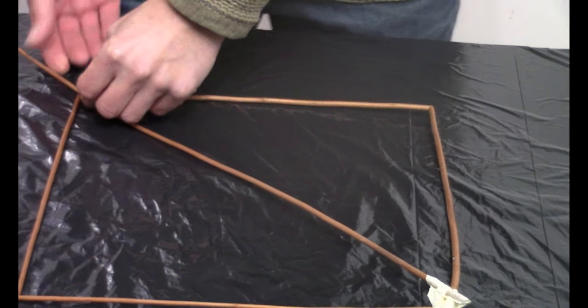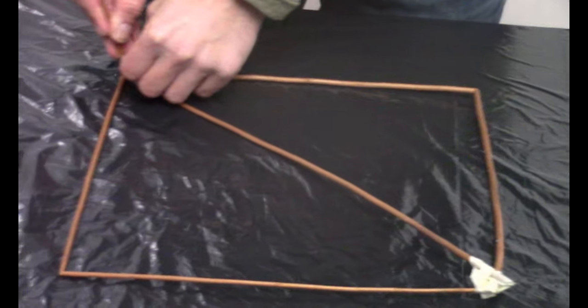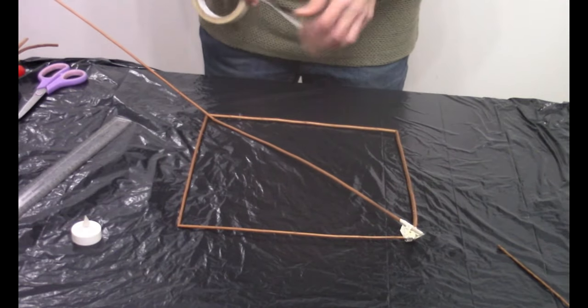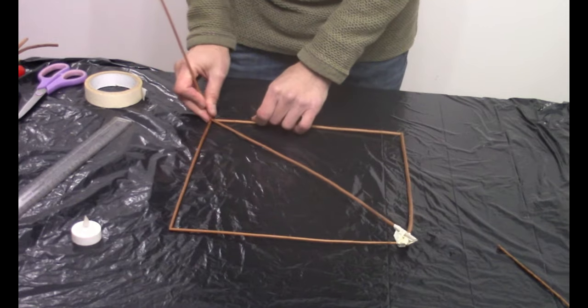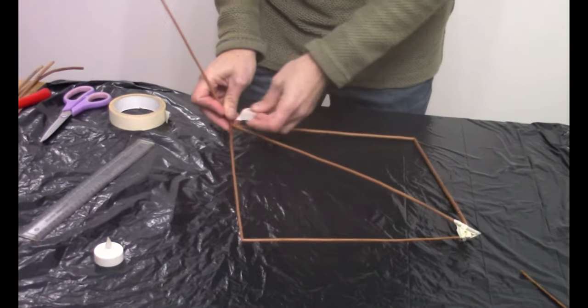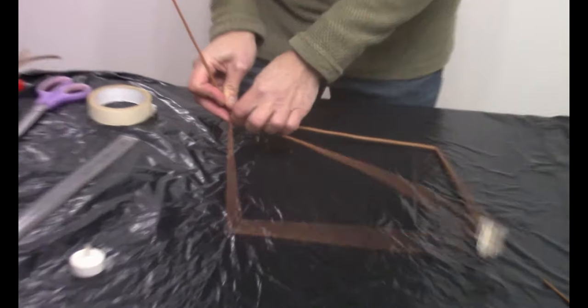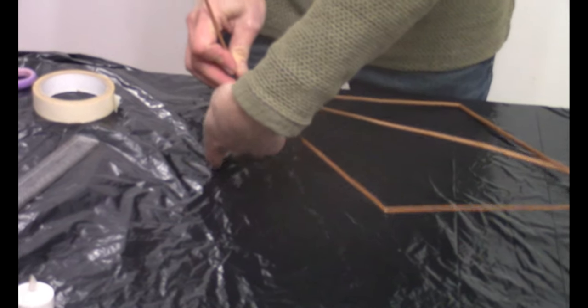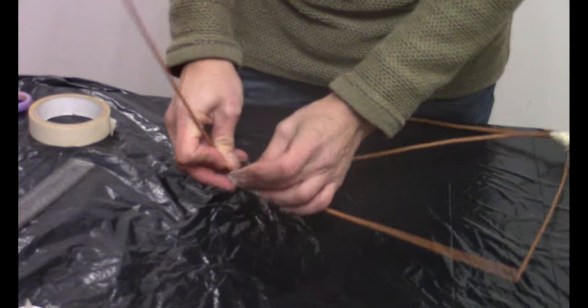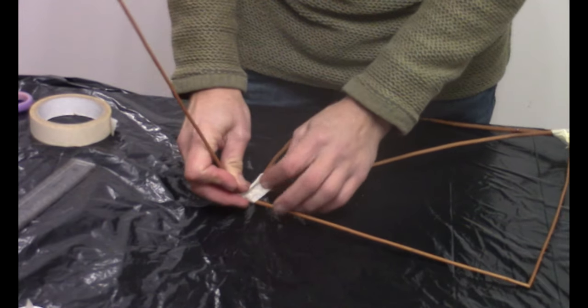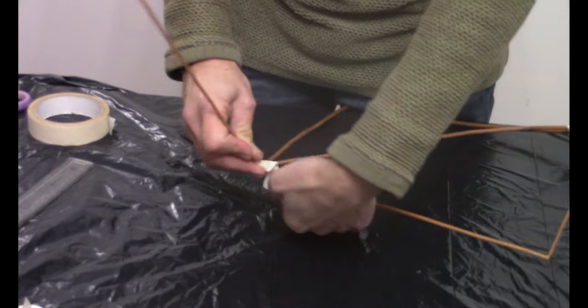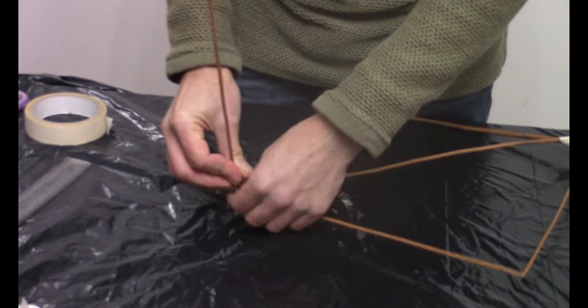Before we stick this side, we're going to put our finger on there and just twist it up, making sure it's still square, and just tape it on like so.